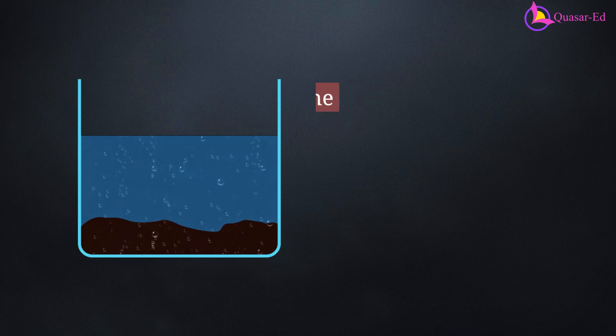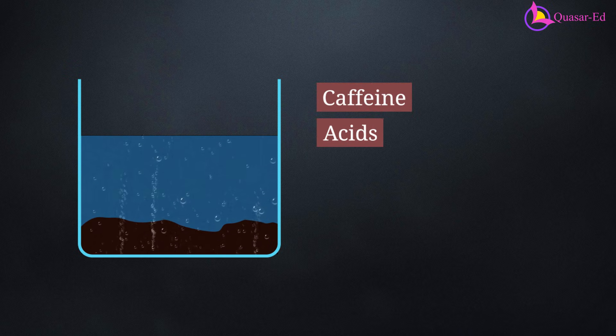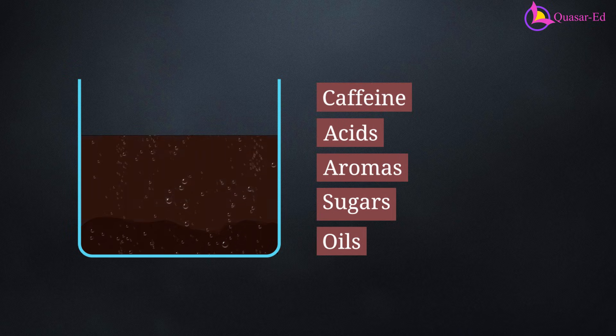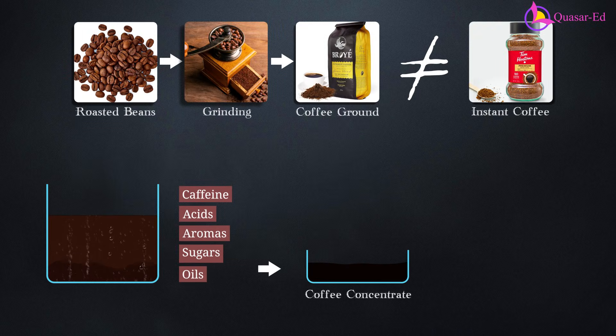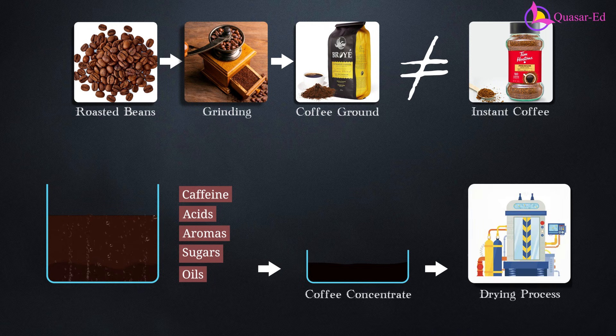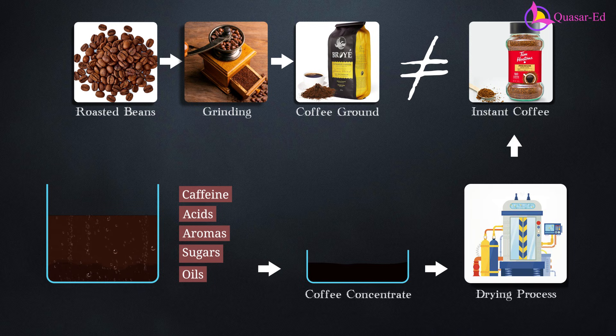Only certain compounds like caffeine, acids, aromas, sugars, and some oils dissolve. Instant coffee is made by brewing a strong batch of coffee, collecting only those dissolved compounds, and then drying them into a powder that fully dissolves again.